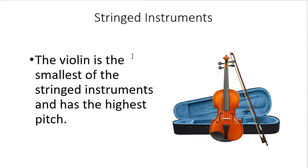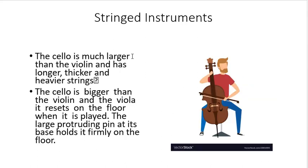Under string instruments, we have the violin. The violin is the smallest of the string instruments and has the highest pitch. Next is the cello, which is much larger than the violin and has longer, thicker, and heavier strings. The cello is bigger than the violin and the viola, so it rests on the floor when it is played. A large protruding pin holds it firmly on the floor.